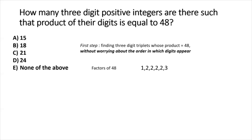Now we explore how many different triplets we can select whose product will still equal 48. We create three partitions among these factors and explore different ways of forming them. When creating the partitions, we must be mindful that the product within any single partition cannot exceed 9, since we are considering digits from 1 to 9.